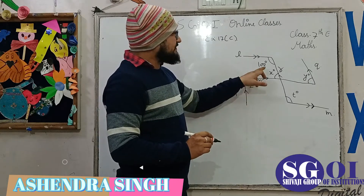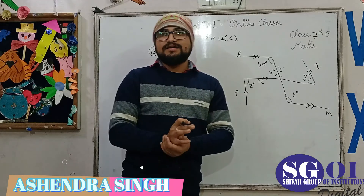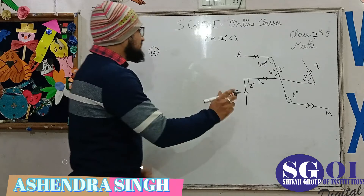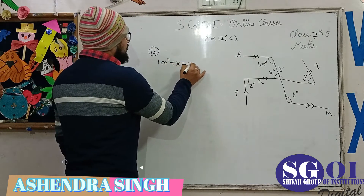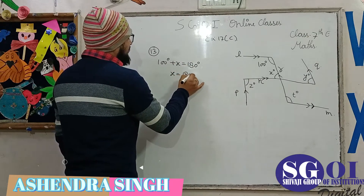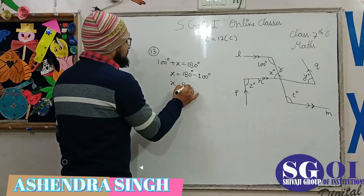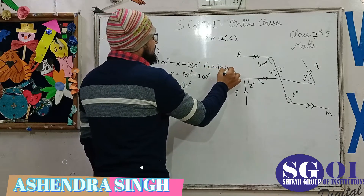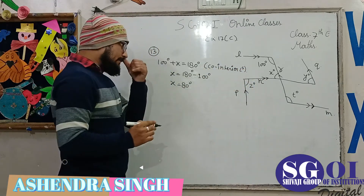Since lines L and M are parallel to each other, 100 degrees and X are co-interior angles. We know co-interior angles sum to 180 degrees, so we write 100 + X = 180 degrees. Therefore X = 180 - 100 = 80 degrees.